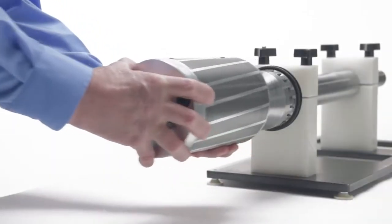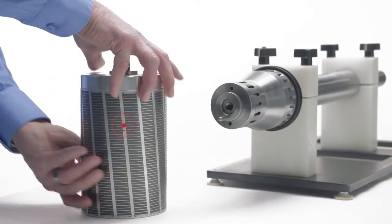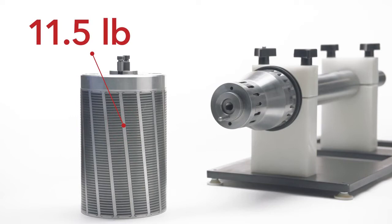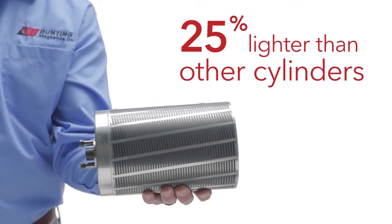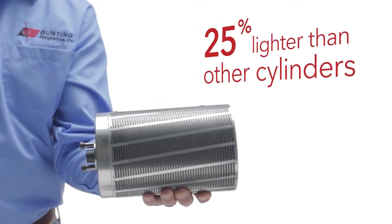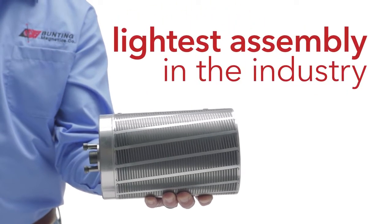The Platemaster cylinder and hub are ultra-light, weighing only 11.5 pounds, 25% less than any other cylinder on the market. It's the lightest assembly in the industry.